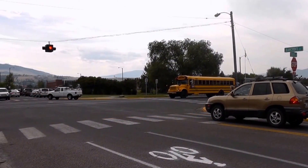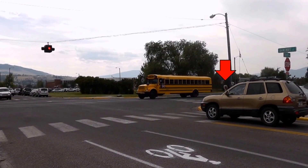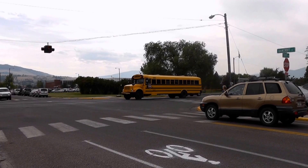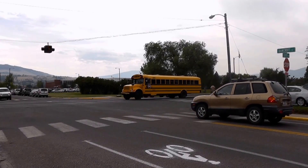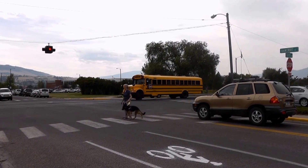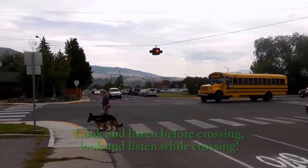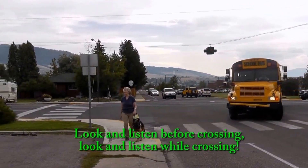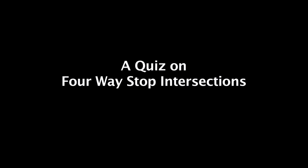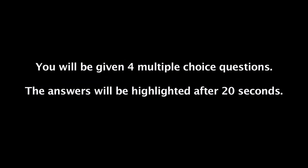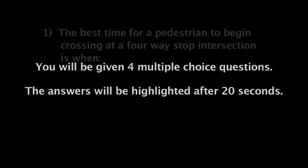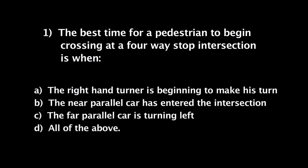The visually impaired pedestrian is at a slight disadvantage in that she is unable to see a driver wave her on. All pedestrians need to stay focused on the traffic and make sure the driver to their left is going to yield before stepping off the curb. After starting the crossing, the pedestrian continues to stay focused. Look and listen before crossing. Look and listen while crossing.